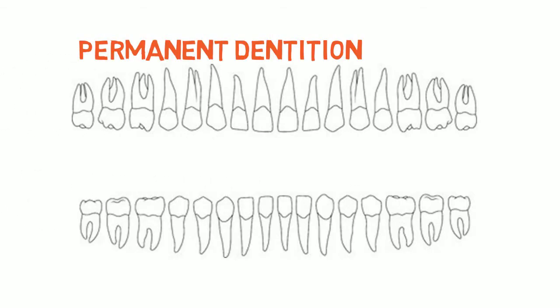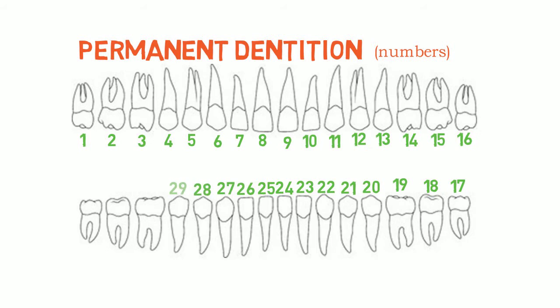In permanent dentition, numbers are used. One designates maxillary right third molar. The tooth numbers then proceed in a clockwise manner to end at mandibular right third molar numbered 32.